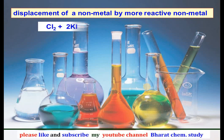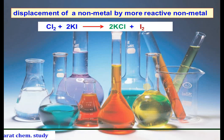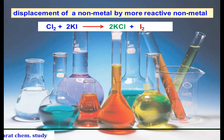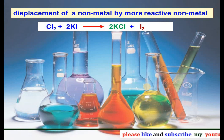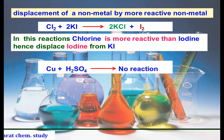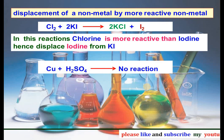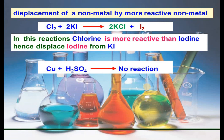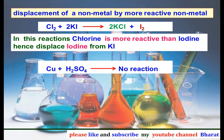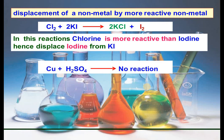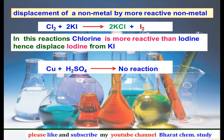Displacement of a non-metal by a more reactive non-metal: chlorine reacts with potassium iodide. Since chlorine is more reactive than iodine, chlorine displaces iodine from potassium iodide to form KCl and produces iodine. However, when copper is added to sulfuric acid, no reaction takes place because copper is below hydrogen in the reactivity series; copper is unable to displace hydrogen from dilute acid or water.